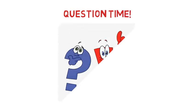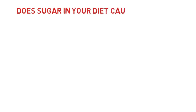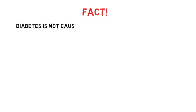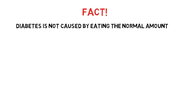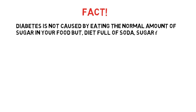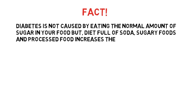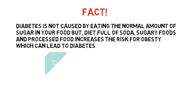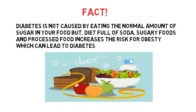Now it's question time! Does sugar in your diet cause diabetes? The fact is that diabetes is not caused by eating a normal amount of sugar in your food. But keep in mind: a diet full of soda, sugary foods, and processed foods does increase your risk for obesity, which can lead to type 2 diabetes.